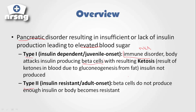Insulin is simply not produced at all in type 1. The reason these patients can develop ketosis is that the body starts to break down fats to produce energy, and the breakdown of those fats produces ketones — that's why they develop diabetic ketoacidosis. Type 1 patients are insulin dependent because it's an immune disorder and they can no longer produce insulin due to destruction of beta cells within the pancreas.